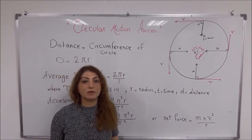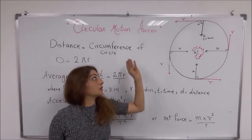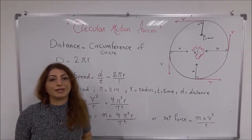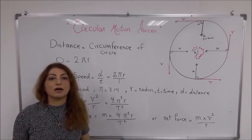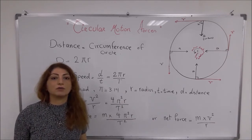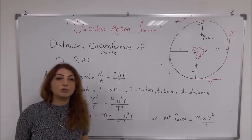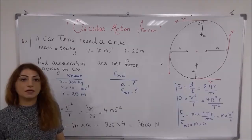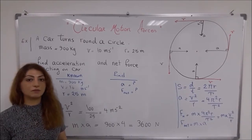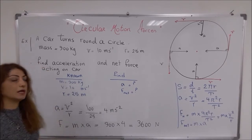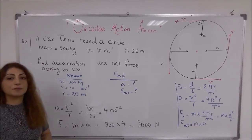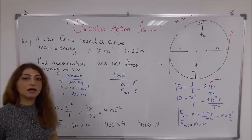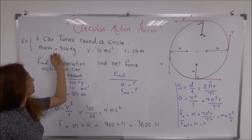Now let's answer some questions regarding this chapter, to see how these equations can be used. Let's have a look at one of the examples. In this example, a car is turning around a circle. Its mass is 900 kg, and the velocity is given as 10 meters per second.